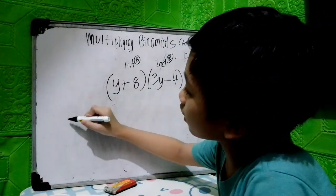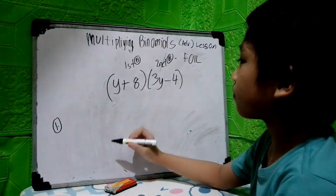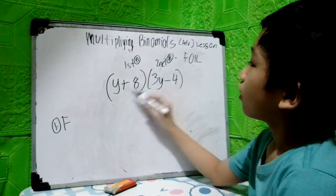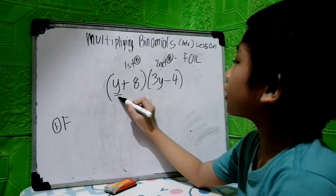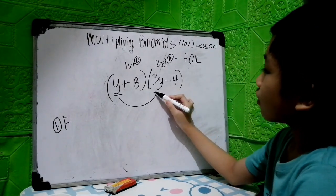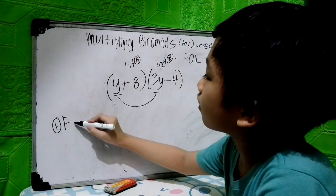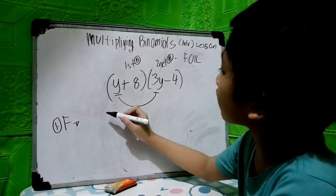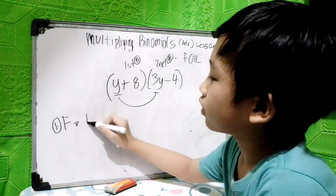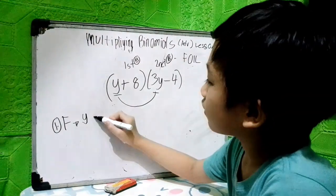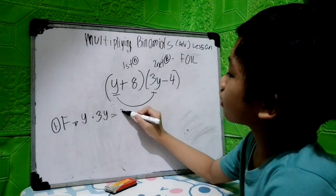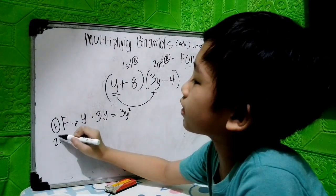Let's write down the first step. First step is F. Get the first term of the first binomial and multiply it by the first term in the second binomial. Our first terms in the first and second binomial are y and 3y. So y times 3y equals 3y squared.